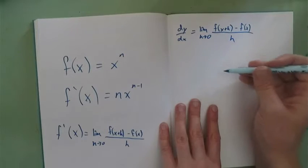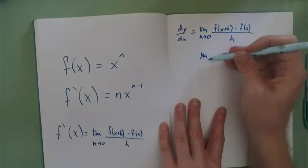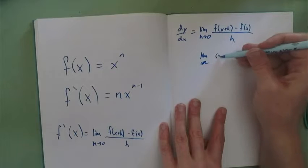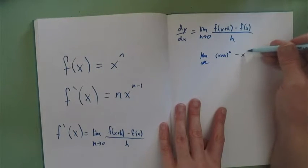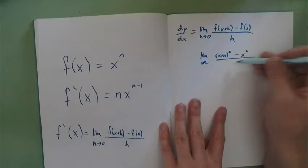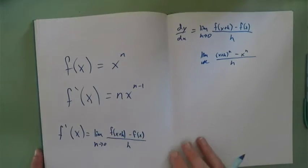f of x plus h minus f of x all over h. And now I'm going to be lazy. Limit as h approaches 0 of x plus h to the power of n minus x to the power of n all over h.